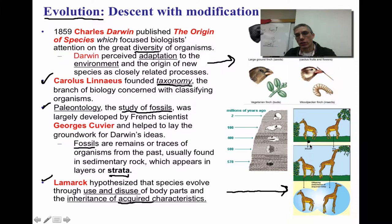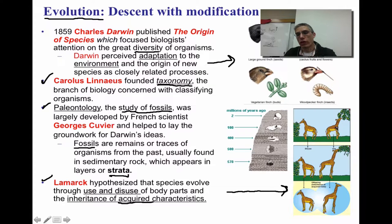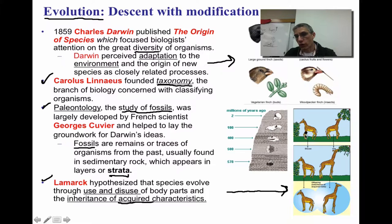We have giraffes: on the left-hand side, giraffes feeding on low-growing shrubs, and on the right a giraffe trying to reach trees. Lamarck's idea of use and disuse was that if a giraffe continued to stretch its neck to reach food, any offspring produced would inherit the characteristic of a longer neck, and over many generations you'd end up with a giraffe with a very long neck. On the other hand, a giraffe feeding on low-level shrubs wouldn't need to stretch, retaining a short neck, and its offspring would only have short necks.